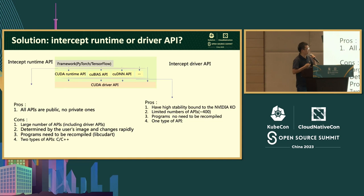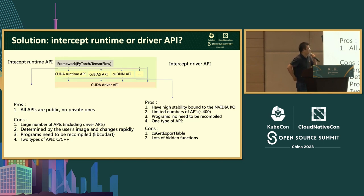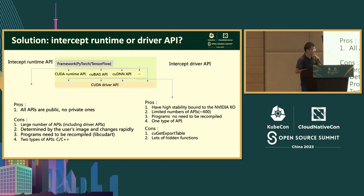An alternative is to intercept at the Driver layer. Advantages: the interface is very stable since it's bound to the kernel module — as long as the kernel module doesn't upgrade, the interface is stable. The number of APIs is limited — around 400+ per version. Applications load the CUDA Driver using dlopen/dlsym so no application modification is needed. All Driver layer APIs are C, making them simpler to implement. However, one major problem is that the Runtime layer uses not only open APIs but also hidden functions obtained via cuGetExportTable — function pointers with no public documentation, making the solution more complex.